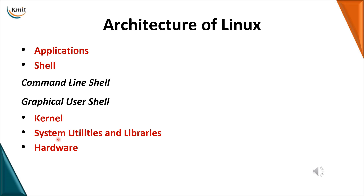At the next level we have system utilities and libraries. System utilities are basic operations required by the system — for example, file compression tools like WinRAR or zip, and antivirus software. System libraries contain predefined functions, similar to other programming languages, which users can call upon. The next level in the architecture is hardware — starting from the application layer, each layer works in turn to make the hardware devices work for the user.